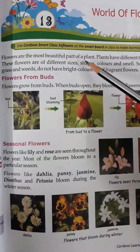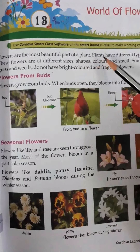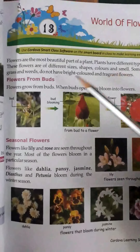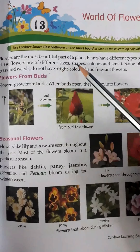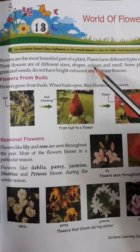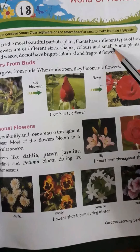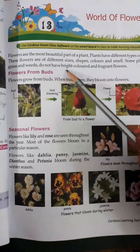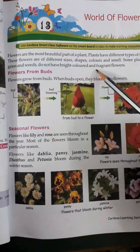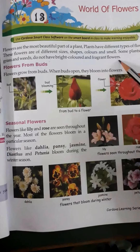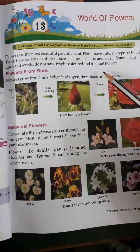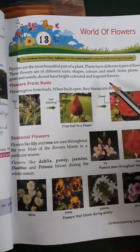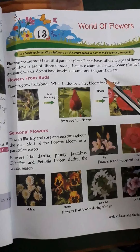Flowers are the most beautiful part of a plant. Plants have different types of flowers. These flowers are of different sizes, shapes, colors, and smell. Some plants like grass and weeds do not have bright color and fragrant flowers. Plants are of different size, different shapes, different colors, smell.